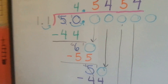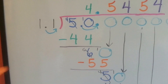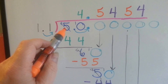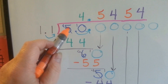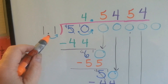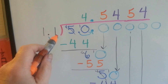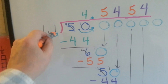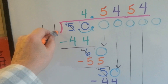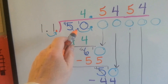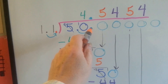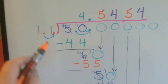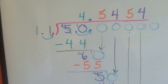Take a look at this one. We had 1 and 1 tenth trying to fit into 5. So I moved and hopped the decimal point over to here, which meant I had to move and hop the decimal point over to here in the dividend. So we raised it straight up.